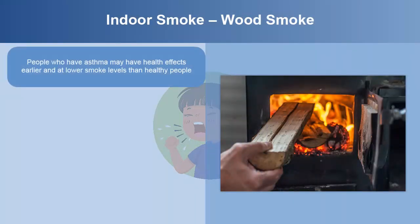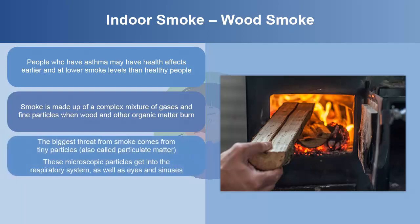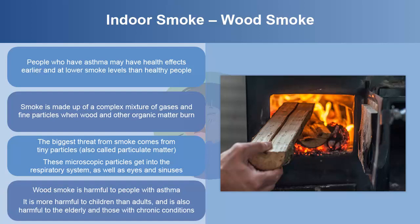People who have asthma may have health effects earlier and at lower smoke levels than healthy people. Smoke is made up of a complex mixture of gases and fine particles when wood and other organic matter burn. The biggest threat from smoke comes from tiny particles, also called particulate matter. These microscopic particles get into the respiratory system as well as eyes and sinuses. Wood smoke is harmful to people with asthma. It is more harmful to children than adults and is also harmful to the elderly and those with chronic conditions.